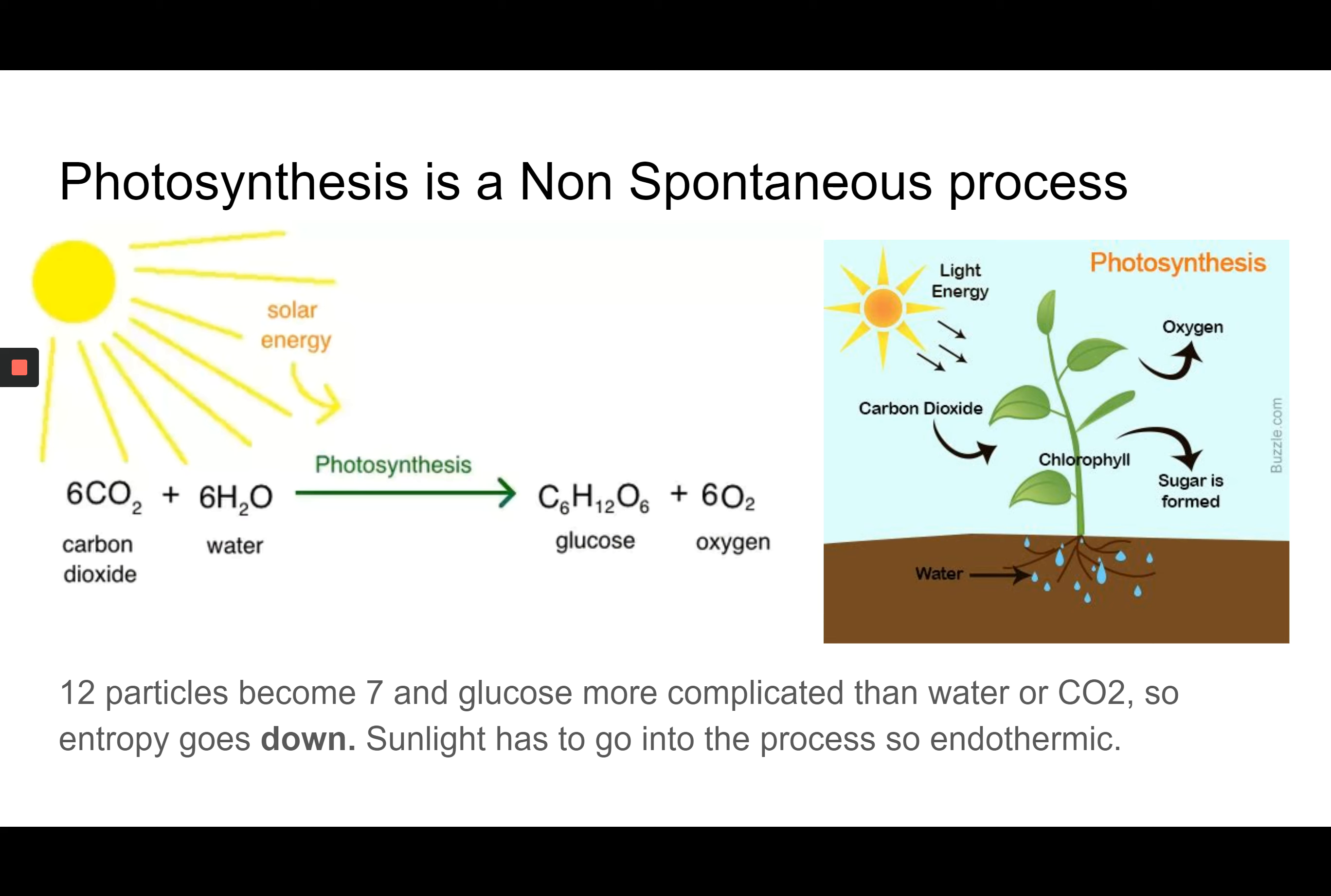If you count up the reactants, we start with 12 reactants, but we are only making 7 particles of product. Also, you can tell from the molecular formula that glucose is a more complicated molecule than either carbon dioxide or water. So this process decreases entropy.